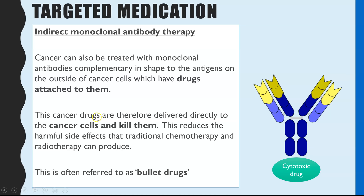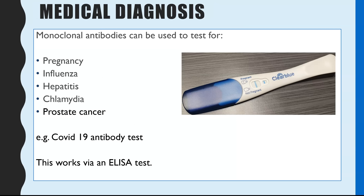Medical diagnosis and pregnancy tests are a second use of monoclonal antibodies. Testing includes pregnancy tests, but also testing for influenza, hepatitis, chlamydia, prostate cancer, HIV, and most recently monoclonal antibodies have been used in antibody tests for COVID-19, the coronavirus. We're going to look at how the ELISA — enzyme-linked immunoabsorbent assay — test works for this.